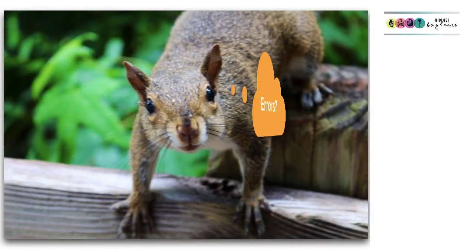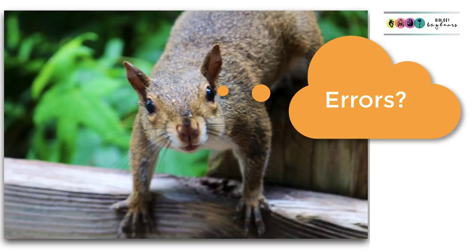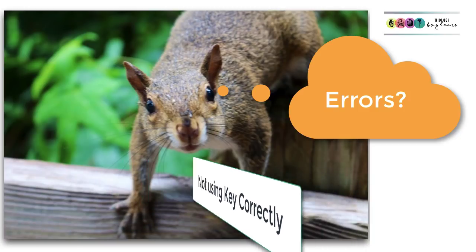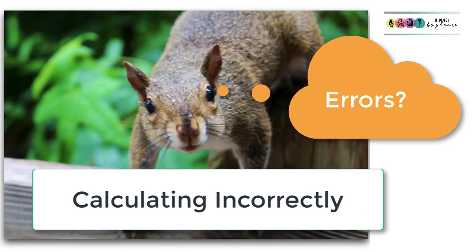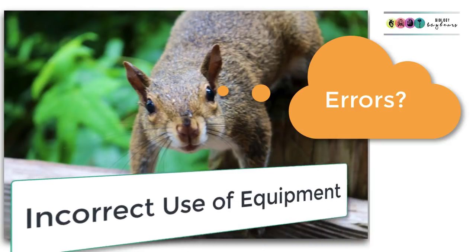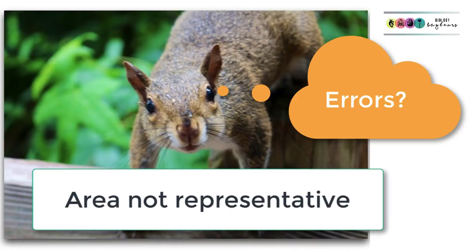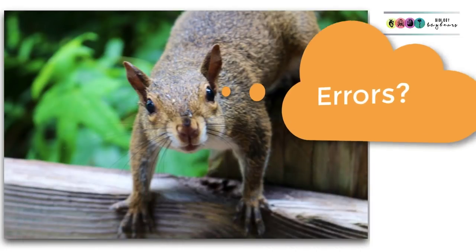What are the possible errors when doing qualitative and quantitative analyses and the wider study of the ecosystem? A classic one is misidentifying a plant or animal by using the key incorrectly, which will throw your results way off. A second error is miscalculating. A third is using equipment incorrectly. A fourth is picking an area that is too small and not representative of the true ecosystem.